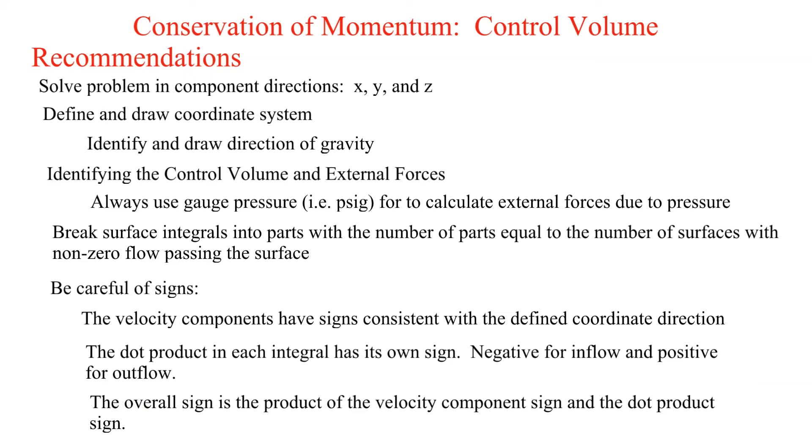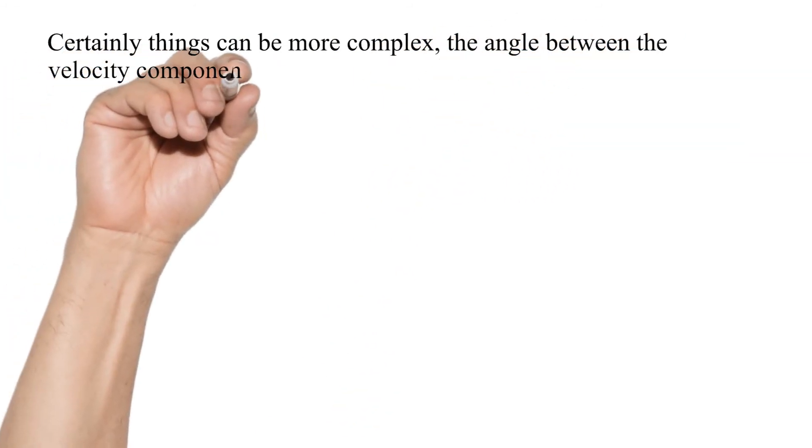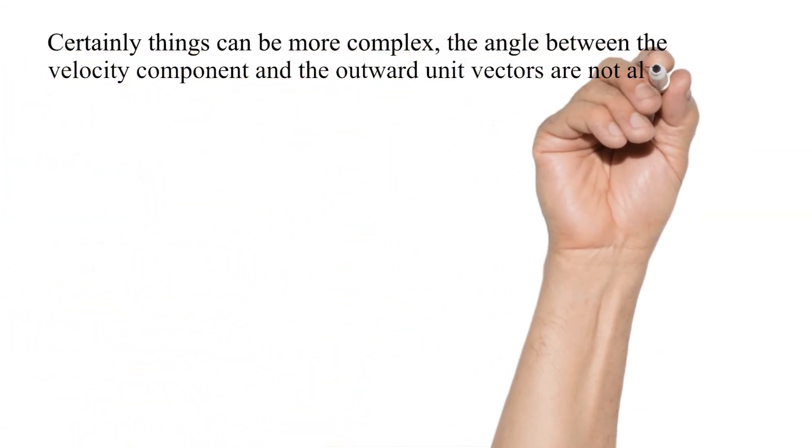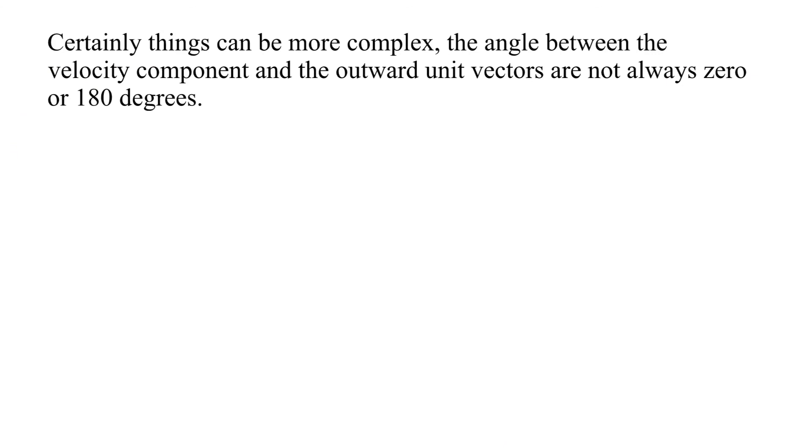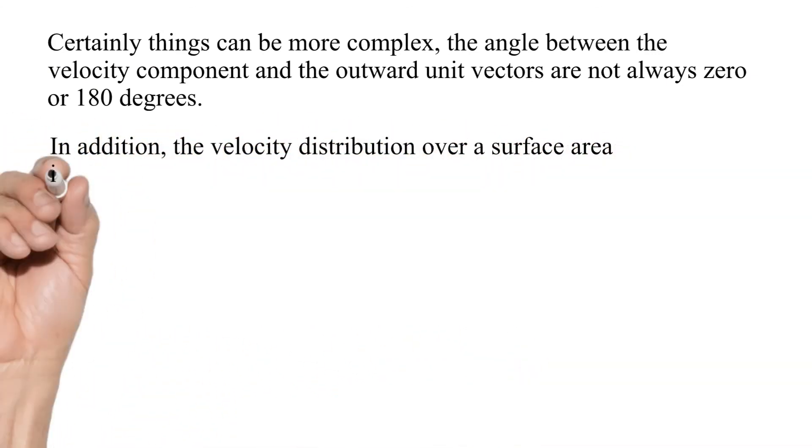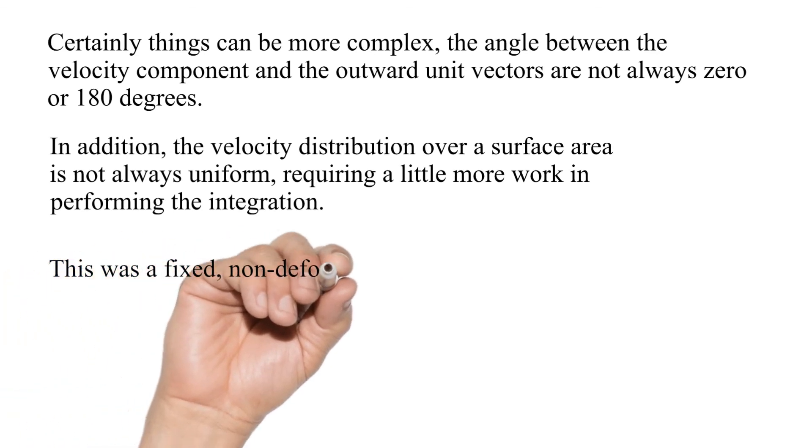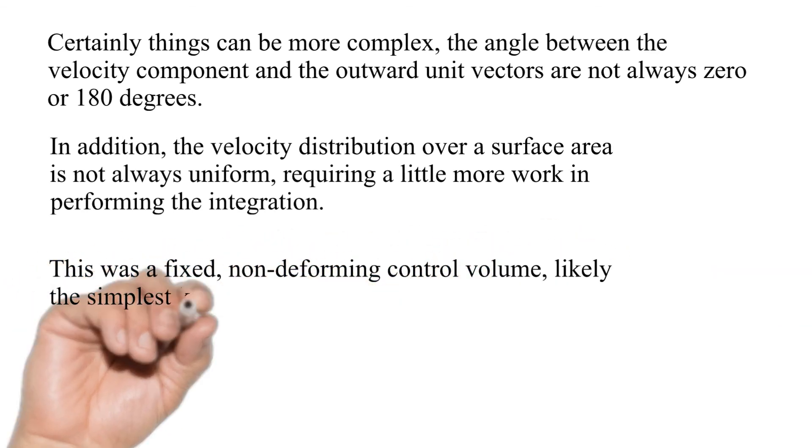Certainly things can be more complex. The angle between the velocity component and the outward unit vectors are not always zero or 180 degrees. In addition, the velocity distribution over a surface area is not always uniform requiring a little more work in performing the integration. This was a fixed non-deforming control volume, likely the simplest kind to analyze. I plan future examples that are more complex.